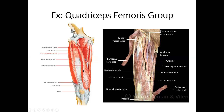For example, the quadriceps femoris group — a collection of muscles on the front of your leg that extend your knee. If you look at them, the fascicles are arranged running toward the middle: here is the central tendon, that white structure, and all of the fibers run toward it. That allows the quadriceps femoris to be very powerful muscles, which is important because they help with standing against gravity and with locomotion — running, walking — and they extend the knee.